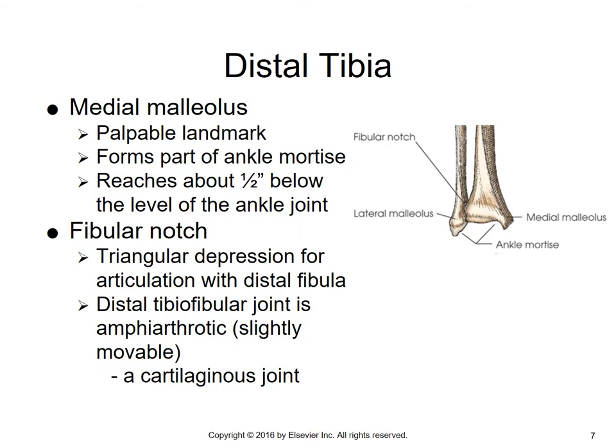Moving on to the distal tibia: at the ankle, you have two malleoli — a medial and a lateral malleolus. Since the tibia is the medial bone of the lower leg, we talk about the medial malleolus. It's a very palpable landmark. It forms part of the ankle mortise and reaches about one half inch below the level of the ankle joint. There's a little triangular depression for articulation with the distal fibula.